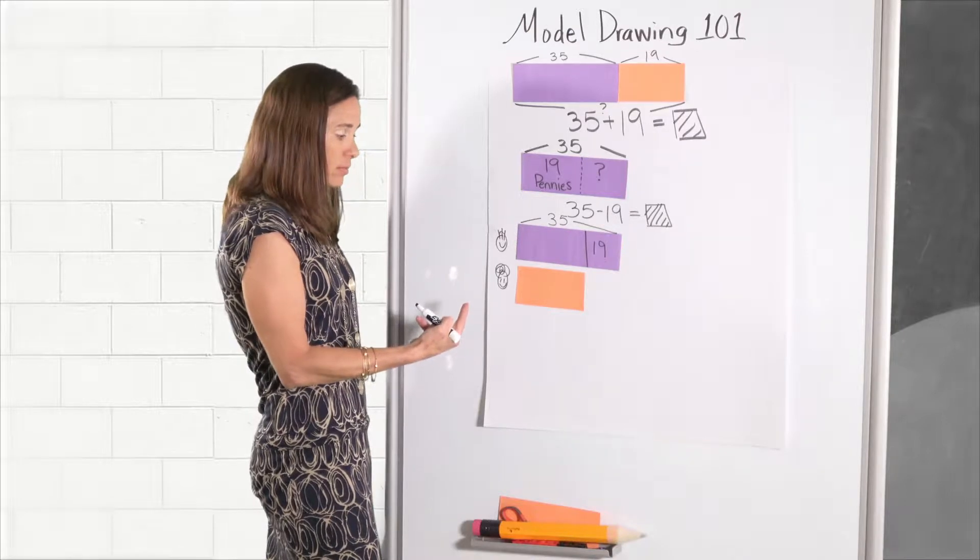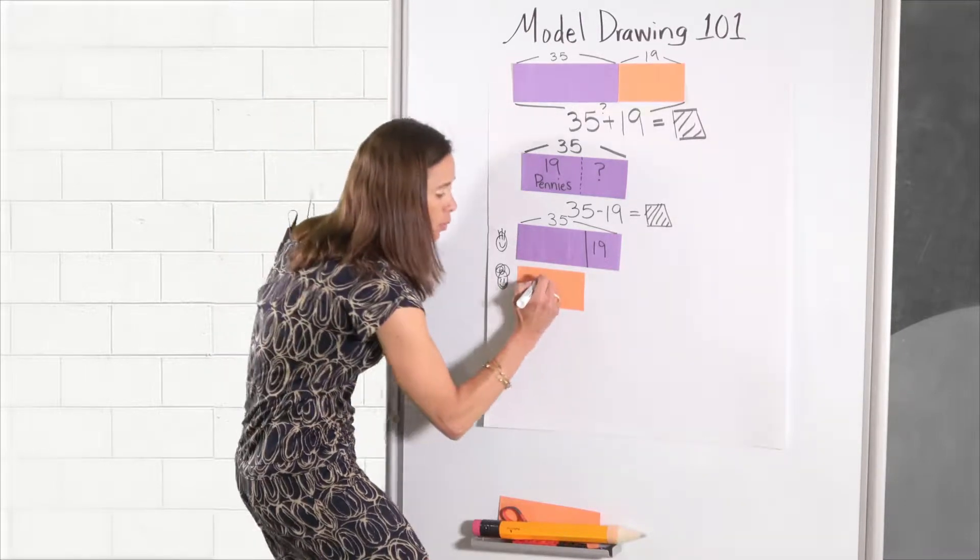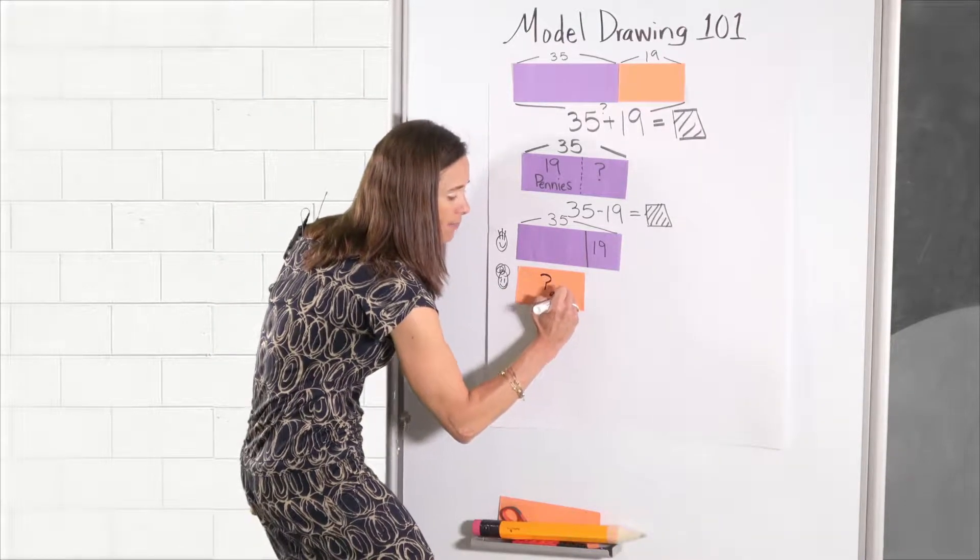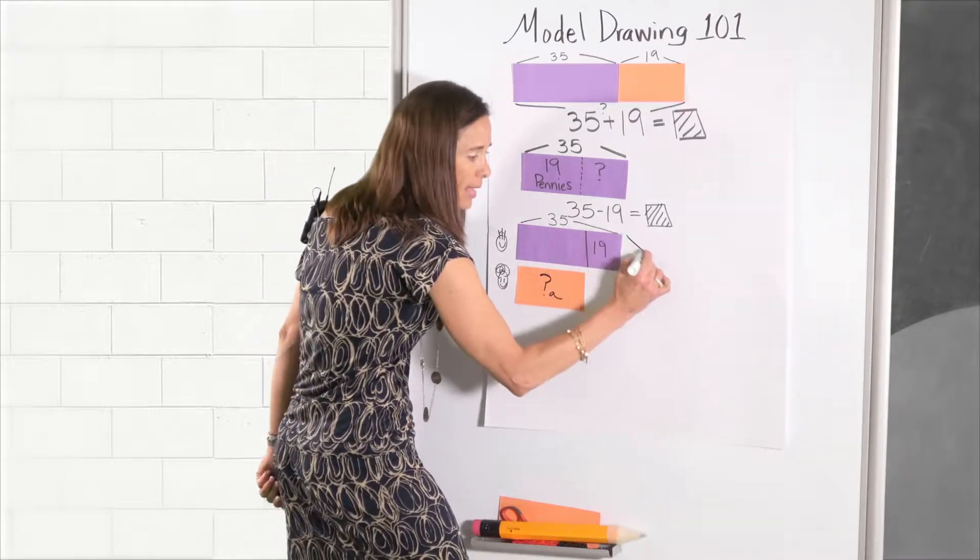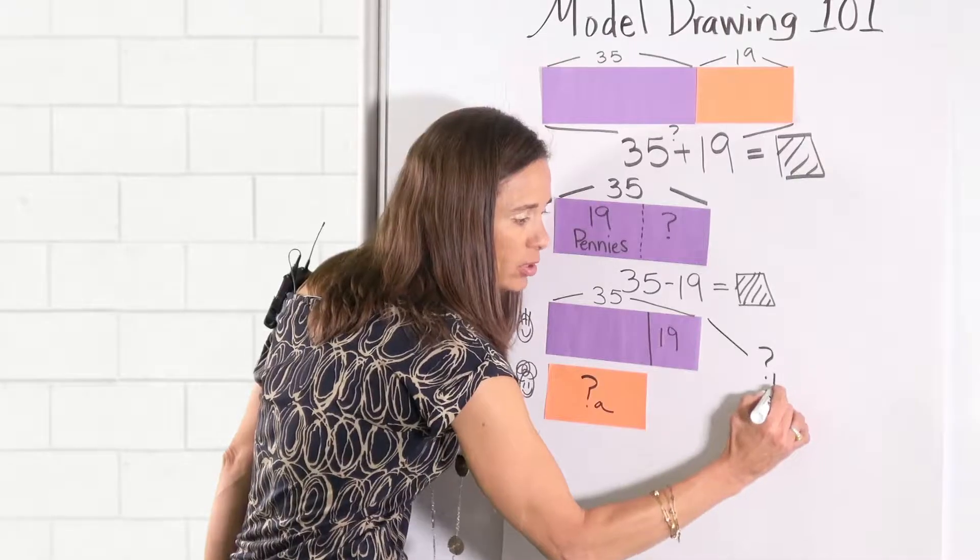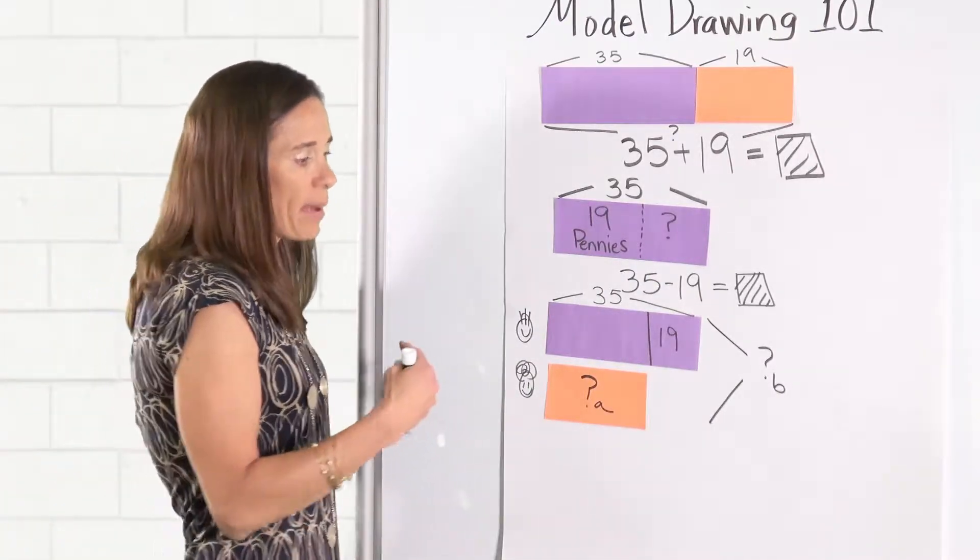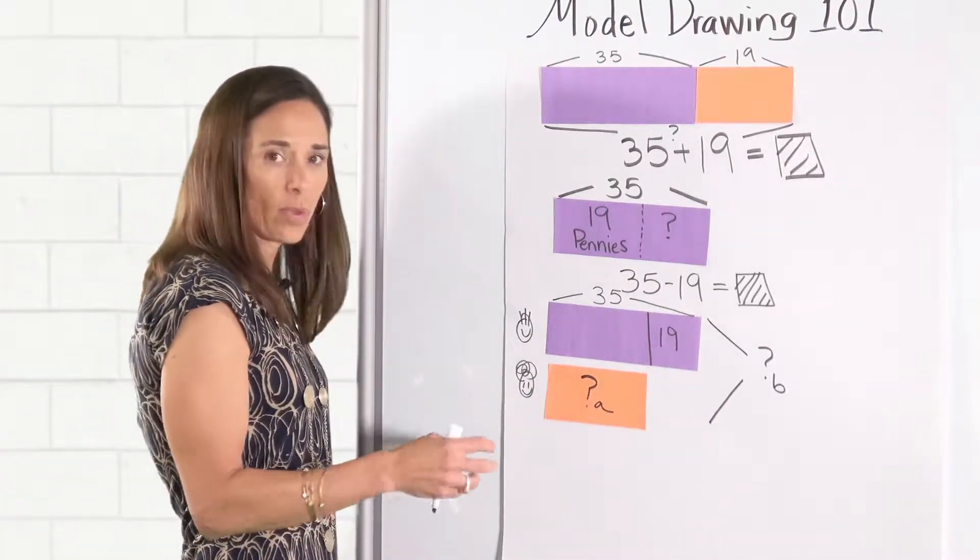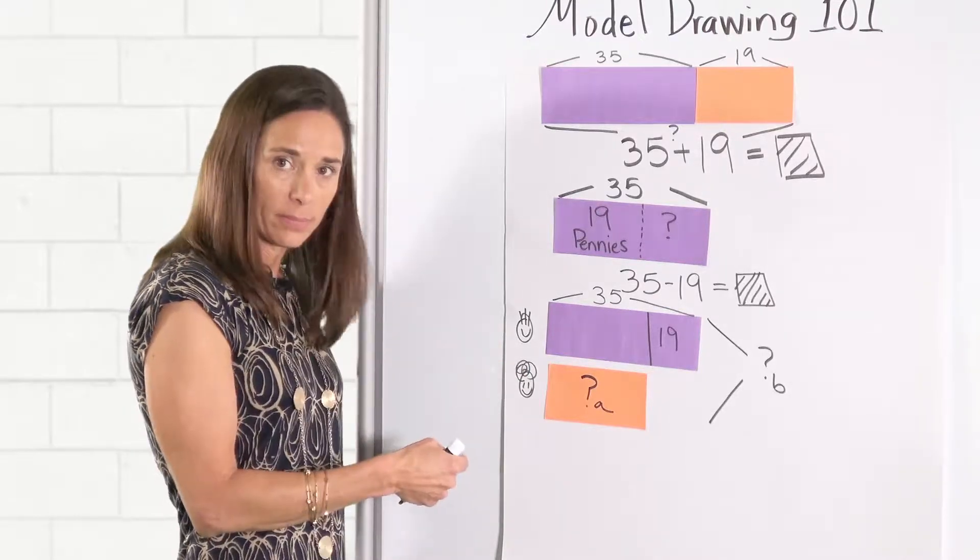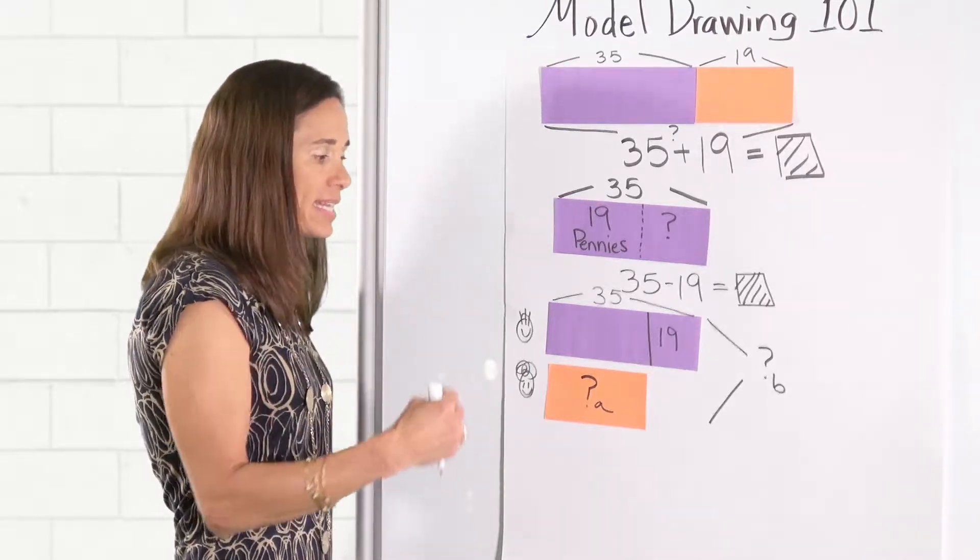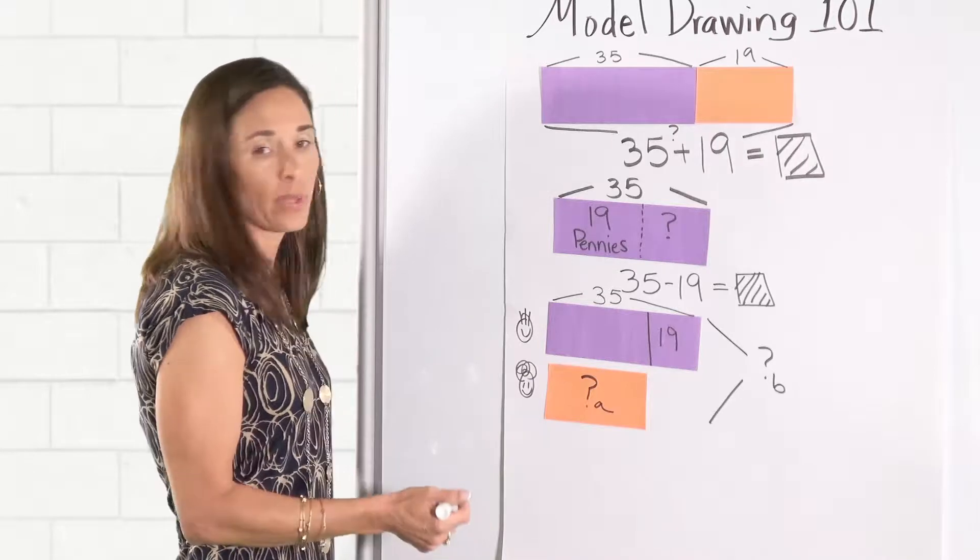We could figure out how many Curly has. We'll put that question mark A. We could figure out maybe how many they have all together. So we could ask different questions. By leaving the question out, we make kids focus on the model. And then we can extend it by asking them what could we figure out.